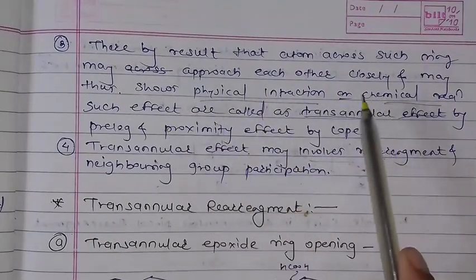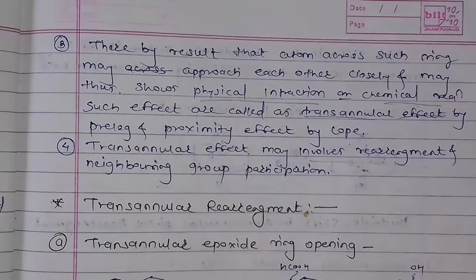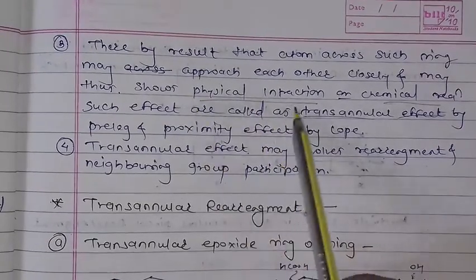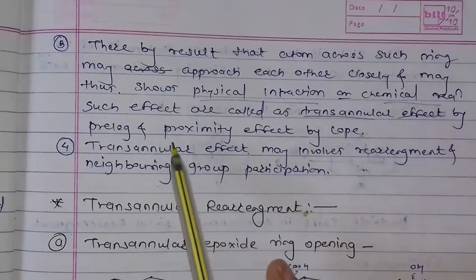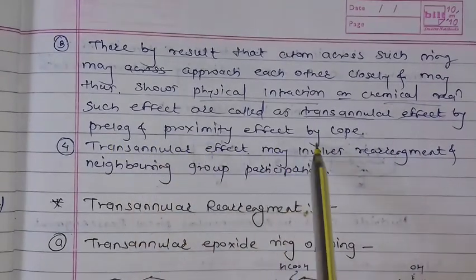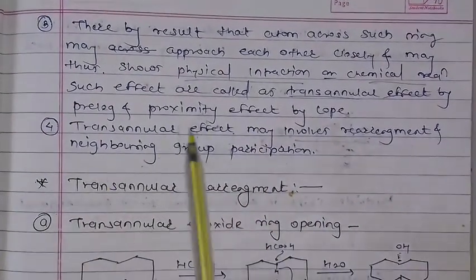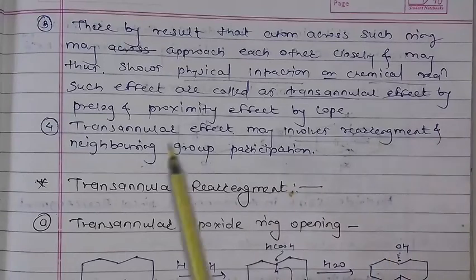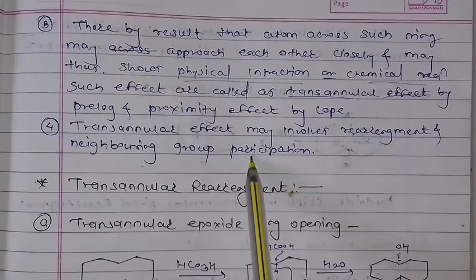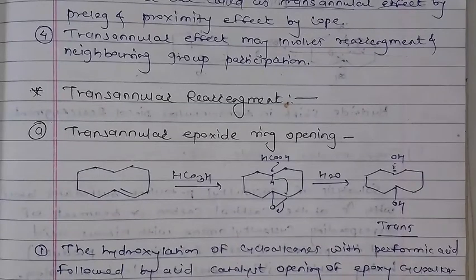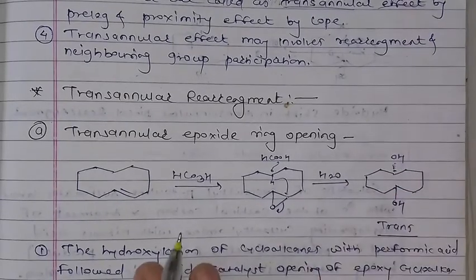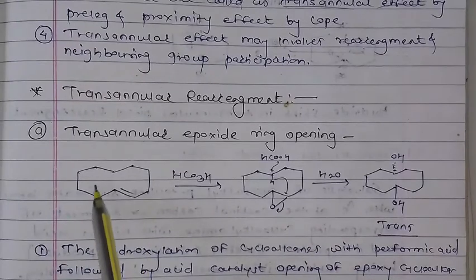The transannular strain has caused different effects. You can also integrate hybridization and create different effects — rings are large, so effects vary. Looking at physical interactions or chemical reactions, you will see they affect them differently. Transannular effect involves rearrangement — it is important to understand what is called NGP, neighboring group participation. You might need to consider transannular rearrangement and transannular hydride shifts.